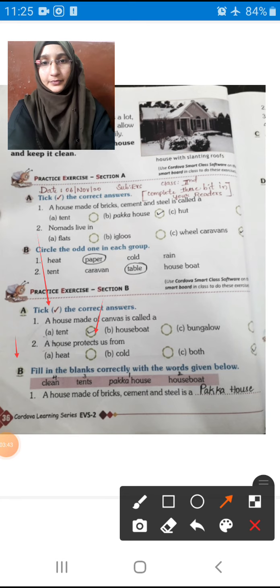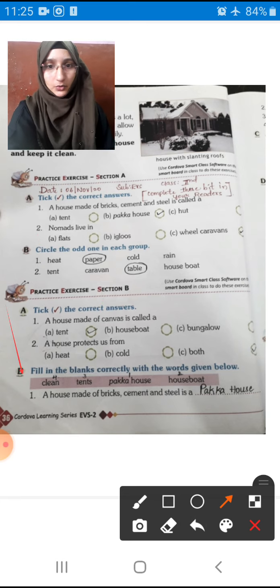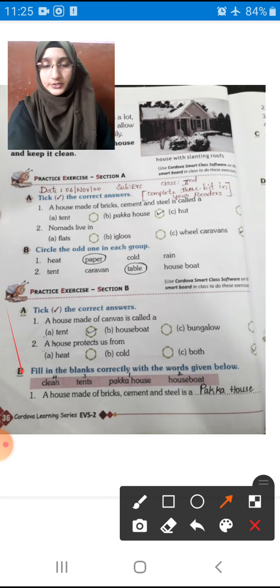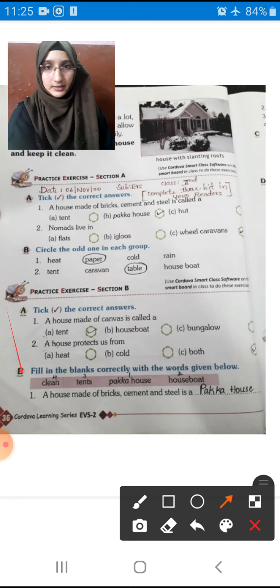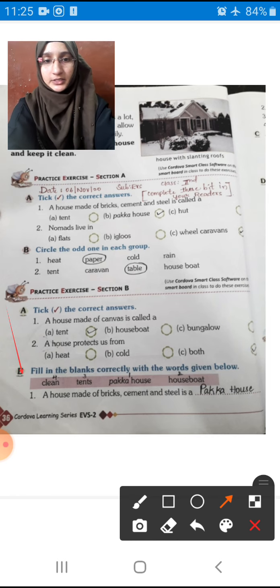B bit: Fill in the blanks correctly with the words given below. Options are given in the hint box: Clean, tents, pakka house and houseboat. First one: A house made of brick, cement and steel is a house which is called pakka house children. So write down the third option from the hint box: Pakka house. You can copy down the spellings from the hint box children.